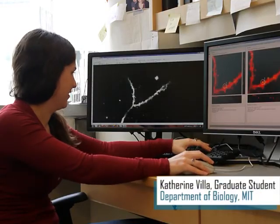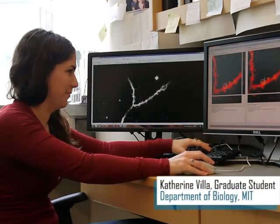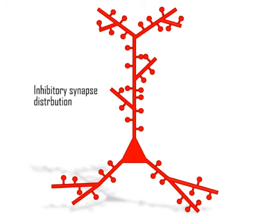Looking across an entire neuron, we found that inhibitory synapses on the shaft were uniformly distributed across apical and basal dendrites. Inhibitory spine synapses were half as abundant as shaft synapses, but interestingly, were differentially distributed with higher densities along the distal apical dendrites.